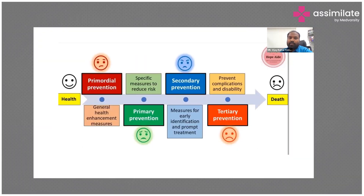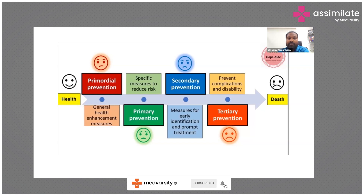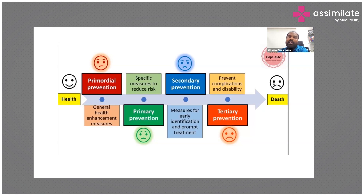We are all aware of the levels of prevention. We have four levels: primordial, primary, secondary, and tertiary prevention, which we have read in our SPM classes. Where does screening come in these levels? It is not primordial prevention, because primordial prevention is preventing before the onset of risk factors. Screening comes under primary prevention, where we target populations at risk and screen them for identification of new disease. So cancer screening comes under primary prevention.